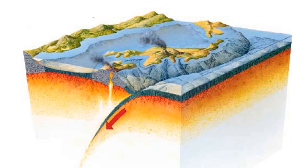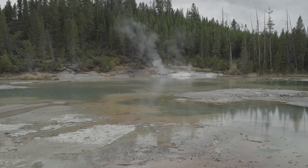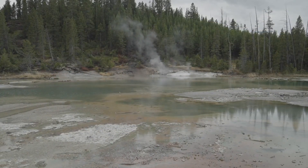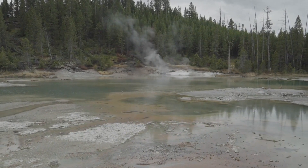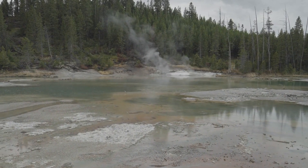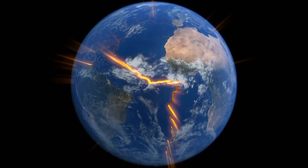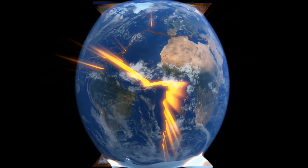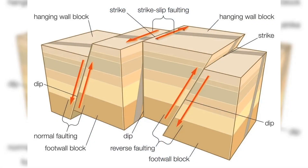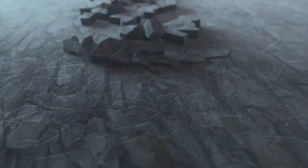Understanding earthquakes and tectonic activity. To comprehend the potential connection between dried-up lakes and earthquakes, it is crucial to grasp the fundamental principles of seismic activity. Earthquakes occur due to the movement of tectonic plates, vast sections of the Earth's crust that are in constant motion. These plates interact along fault lines, fractures in the Earth's crust, where stress accumulates over time. When the stress exceeds the strength of the fault, it is released in the form of an earthquake.